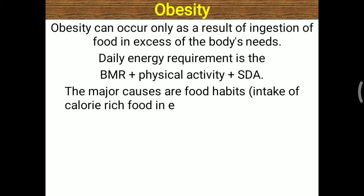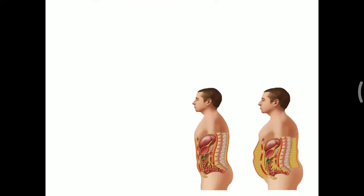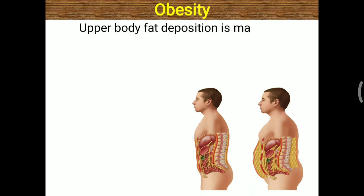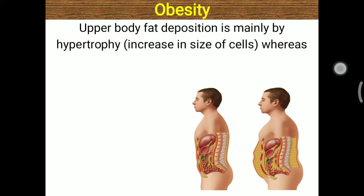The major causes are food habits — intake of calorie-rich food in excess amounts and lack of exercise. Upper body fat deposition is mainly by hypertrophy, an increase in the size of fat cells. If excess fat or carbohydrate is taken, it gets stored in the upper body and the size of the cell is increased.